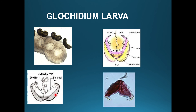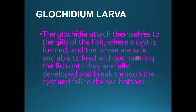These are the diagrams of the glochidium larva. The glochidium larva has a shell, a sensory head, an adhesive head, and a velum. The glochidium larva attaches to the gills of the fish, where a cyst is formed. The larvae are safe and able to feed without harming the fish until they are fully developed and break through the cyst and fall to the sea water.